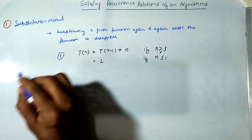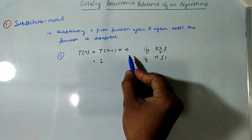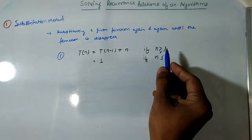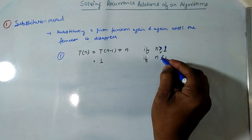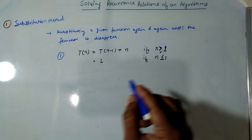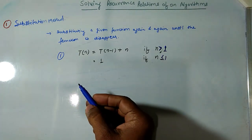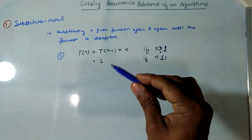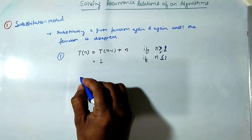For example, suppose we have a recurrence relation T(n) = T(n-1) + n, if n is greater than 1, and T(n) = 1 if n is less than or equal to 1. This is the base case. Let's try the substitution method.